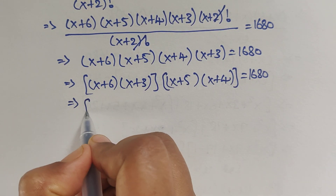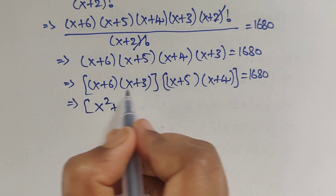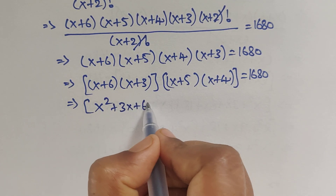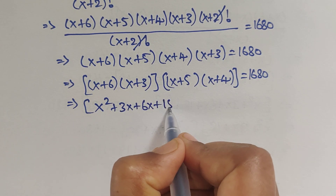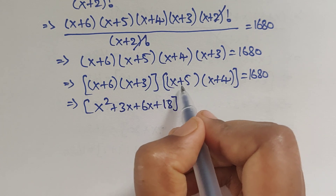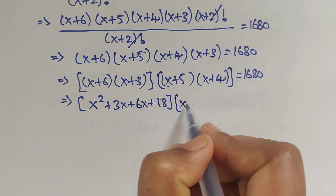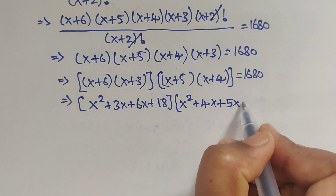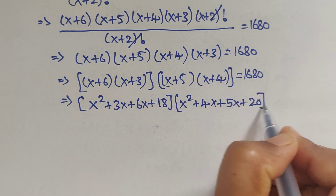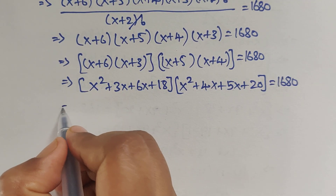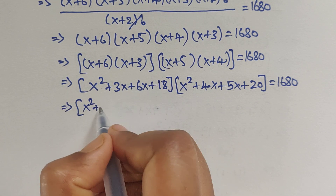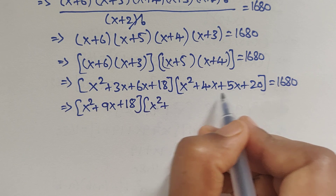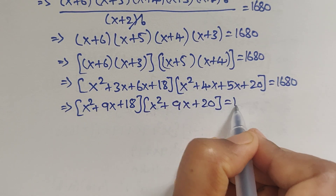Expanding (x+6)(x+3) gives x²+9x+18, and expanding (x+5)(x+4) gives x²+9x+20. So we now have (x²+9x+18)(x²+9x+20) = 1680.